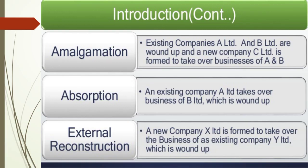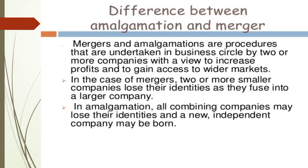In absorption, an existing company A Limited takes over the business of B Limited, which is wound up. In external reconstruction, a new company X Limited is formed to take over the business of existing company Y Limited, which is wound up — that is, when an existing company takes over the business of another company.